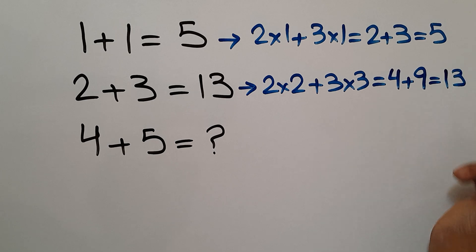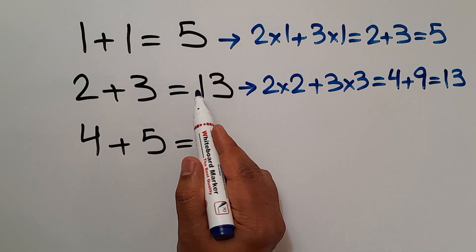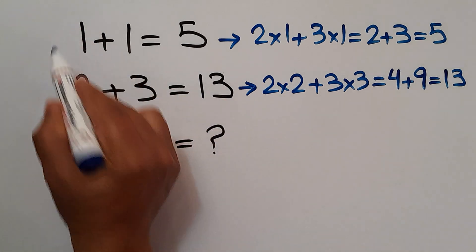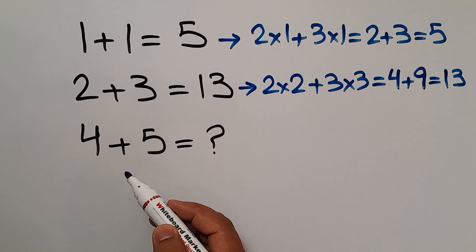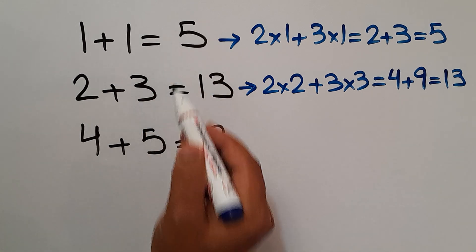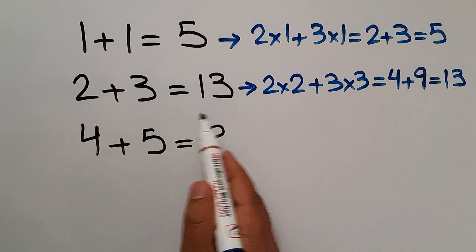So the pattern that exists here is: 2 times the first number plus 3 times the second number equals the third number, or the right hand side number. Okay, now let's use this pattern we got here to find the missing number.